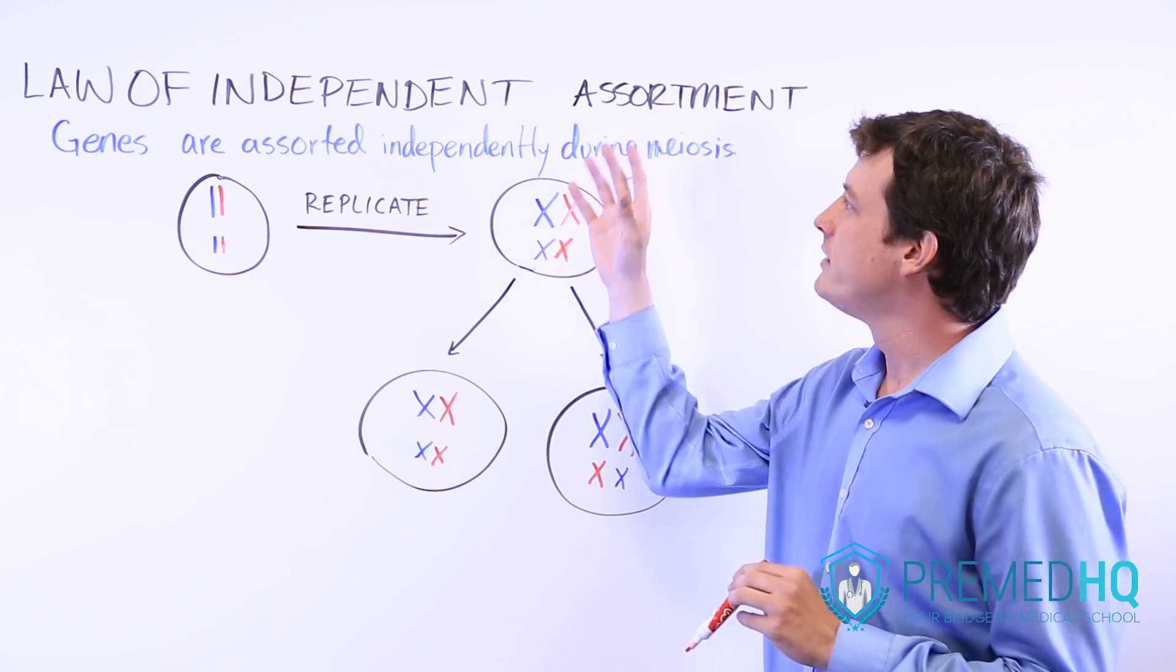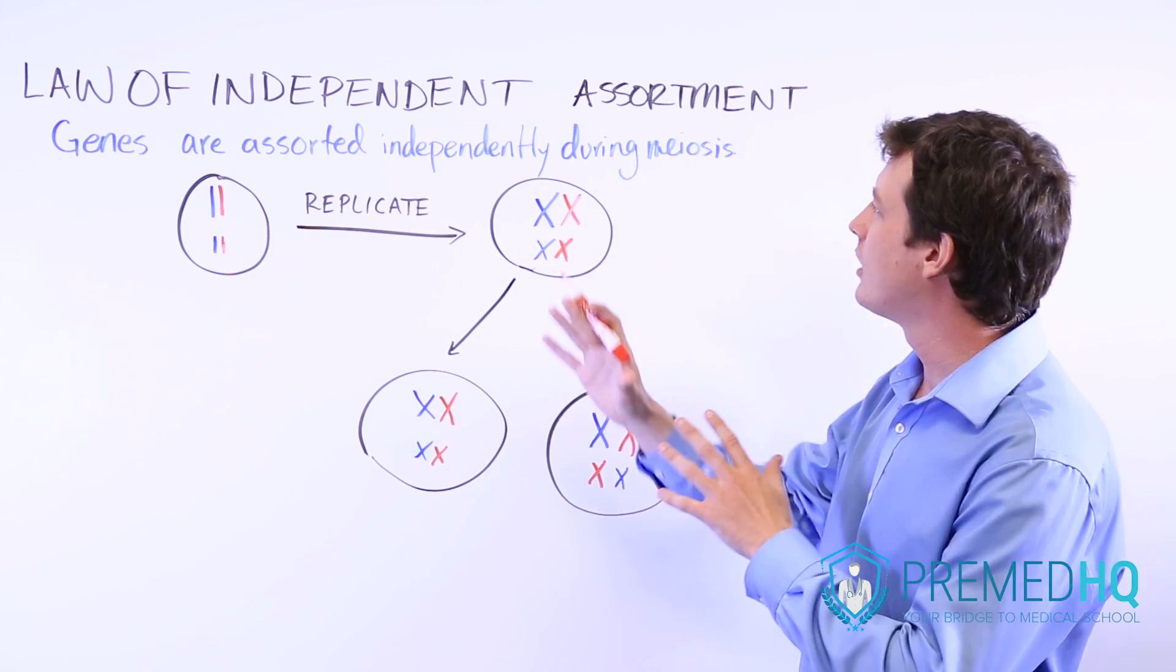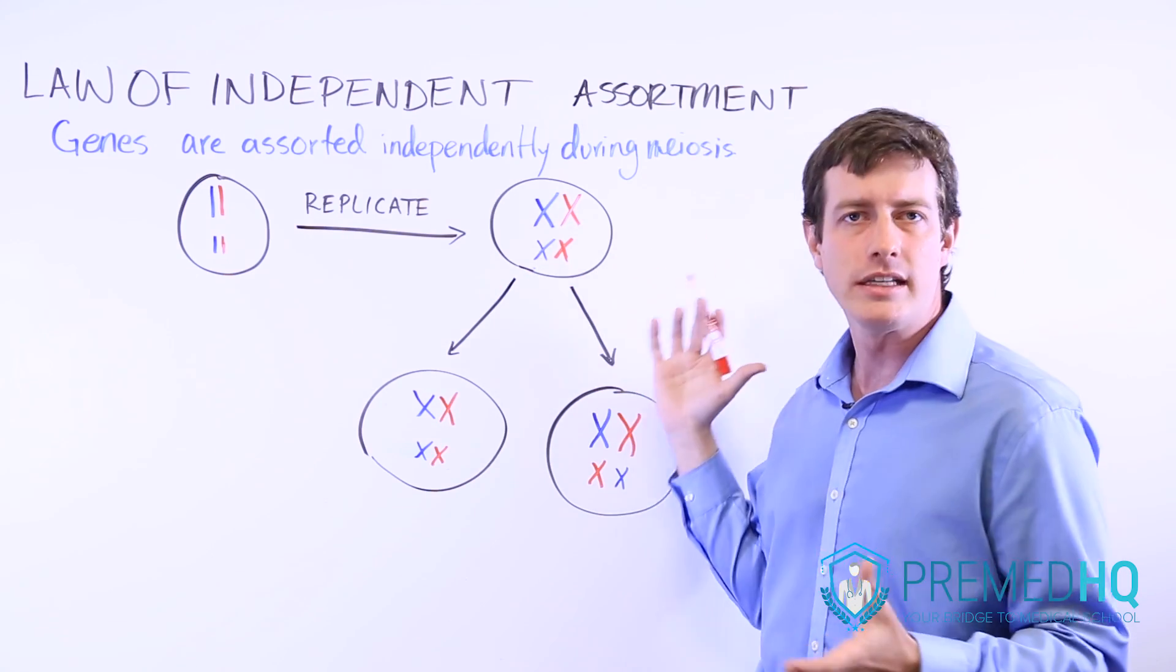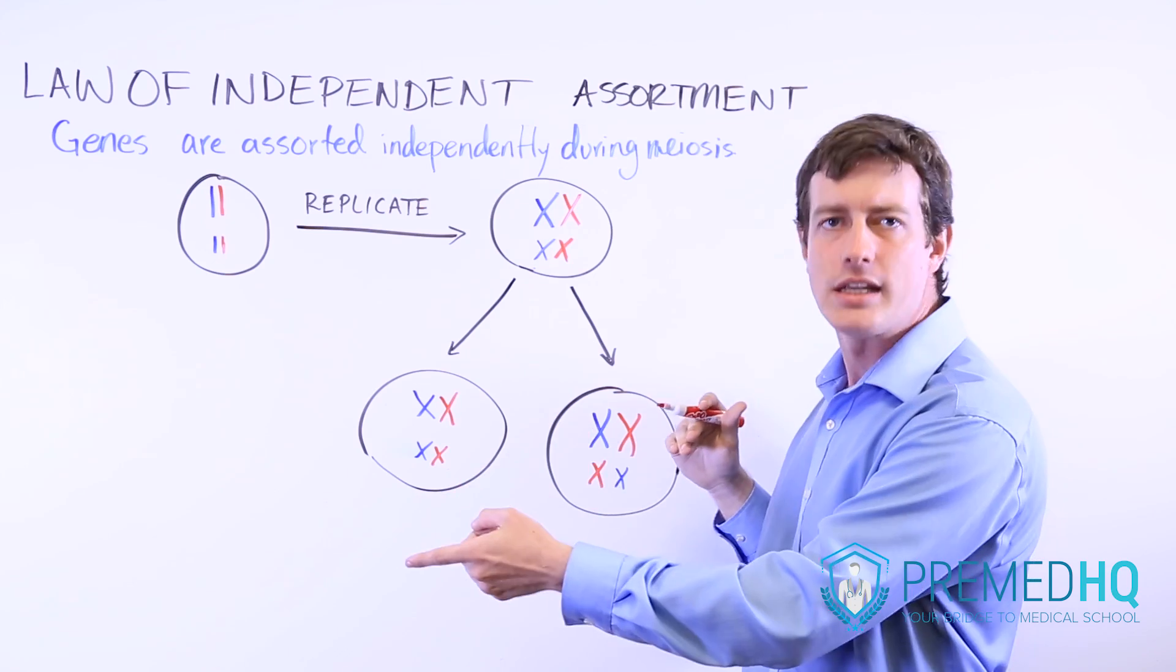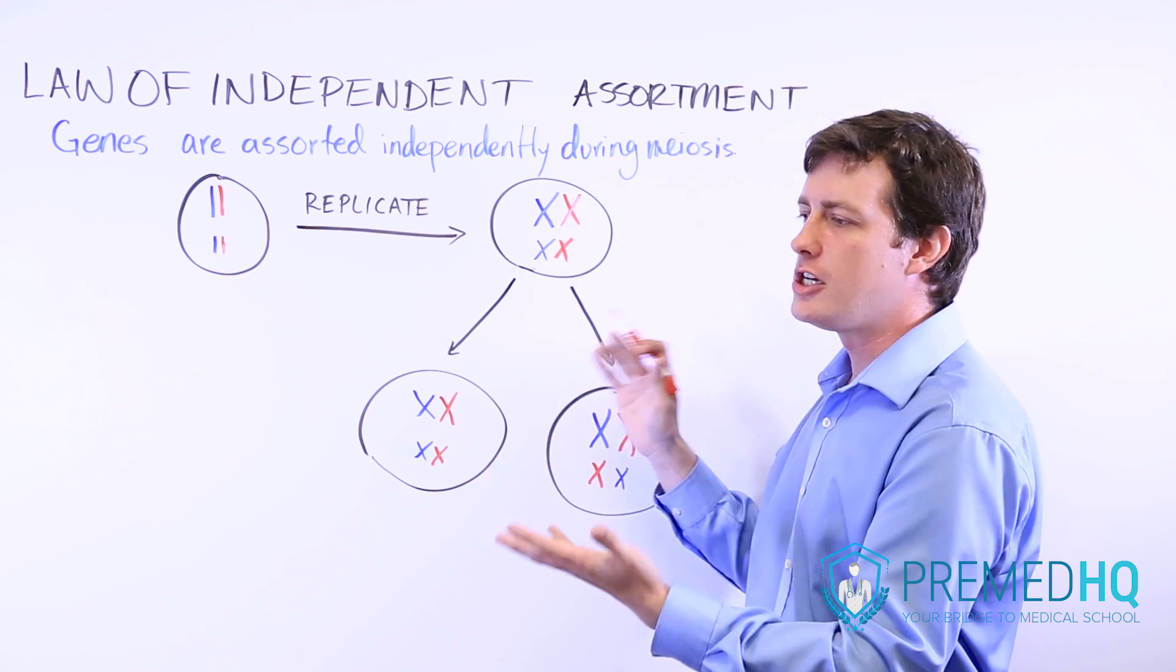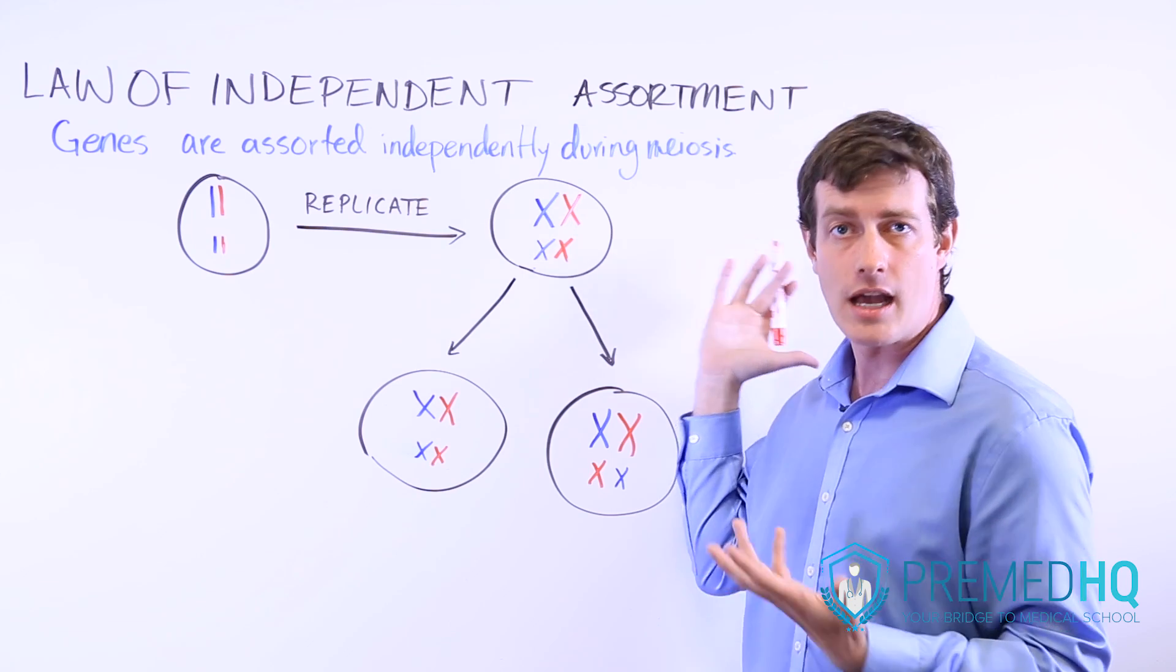And so first we'll talk about Mendel's law of independent assortment. And this says that genes are assorted independently of each other during meiosis. So if one gene ends up in one gamete, the other gene is just as likely to end up in that gamete as the other gamete as well.